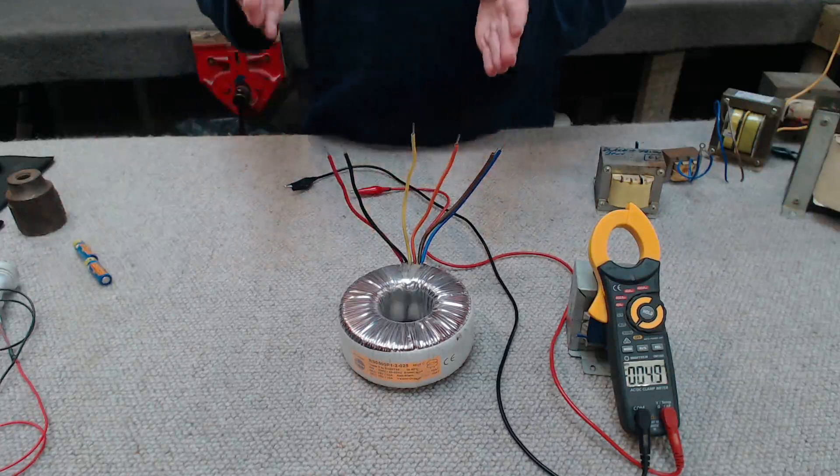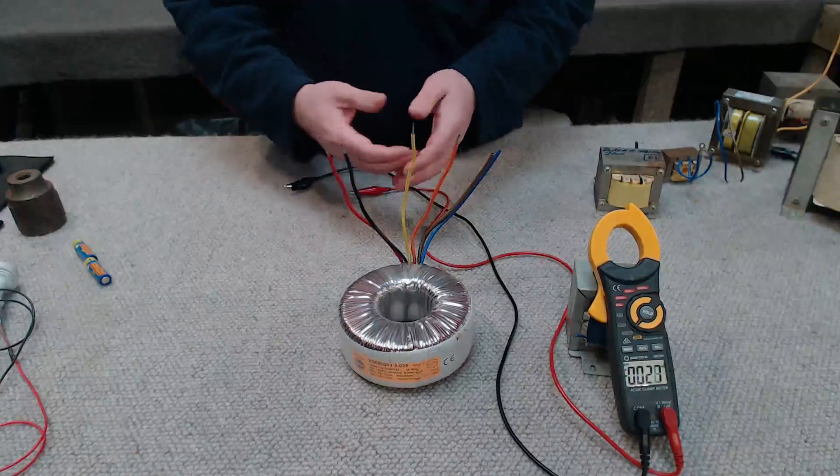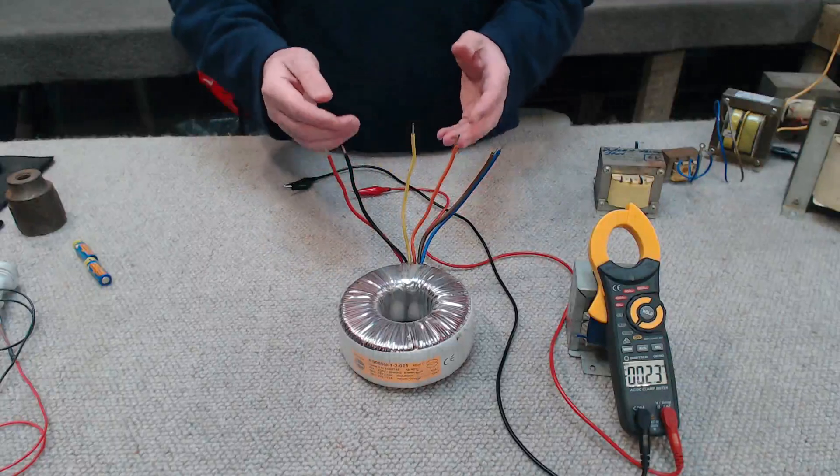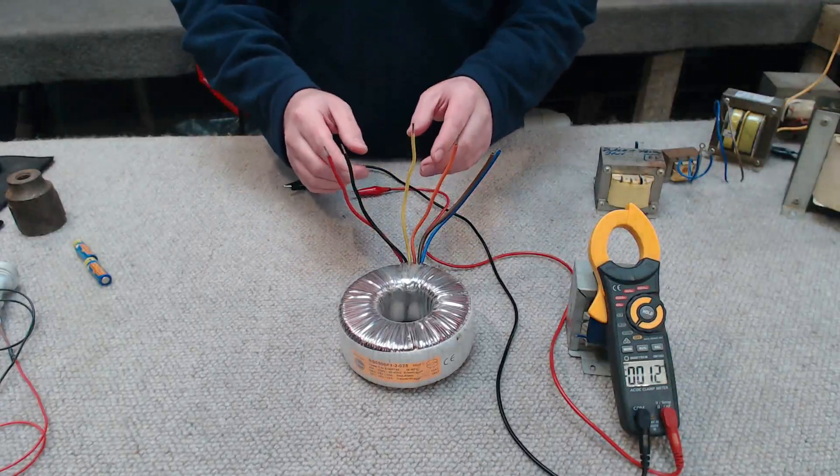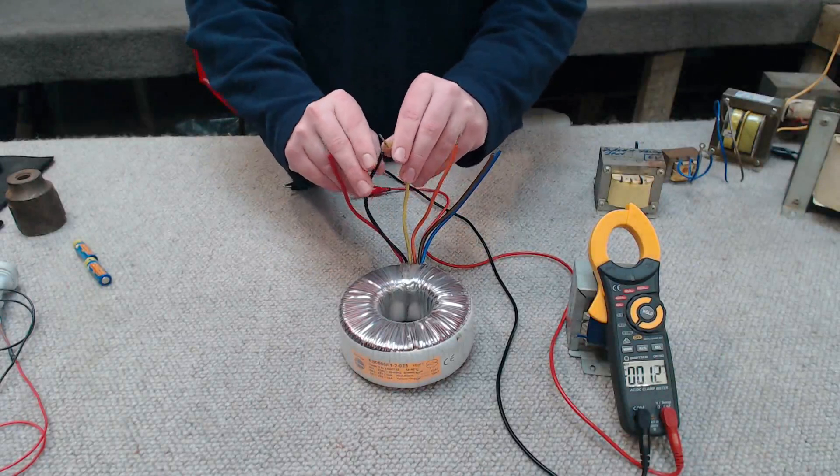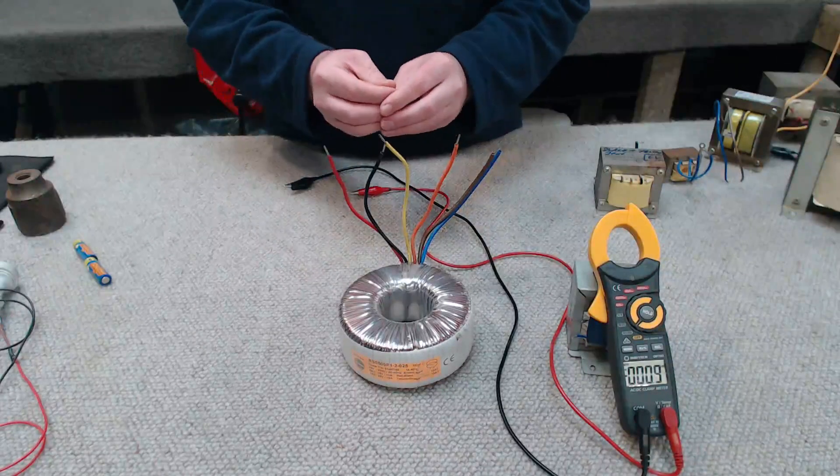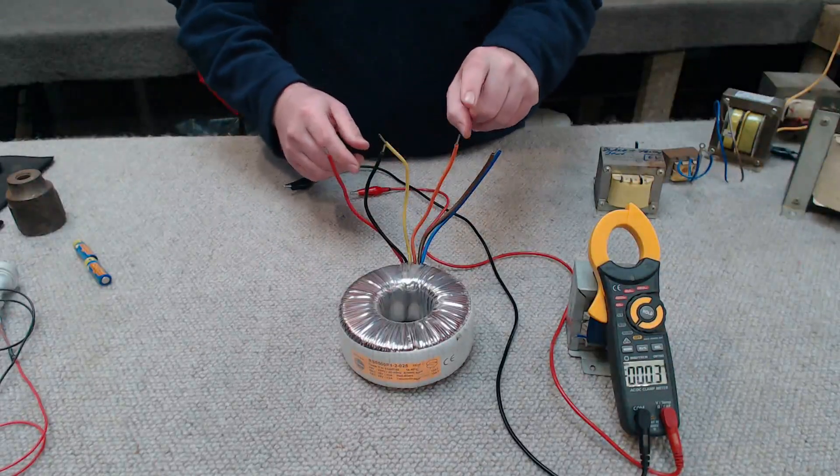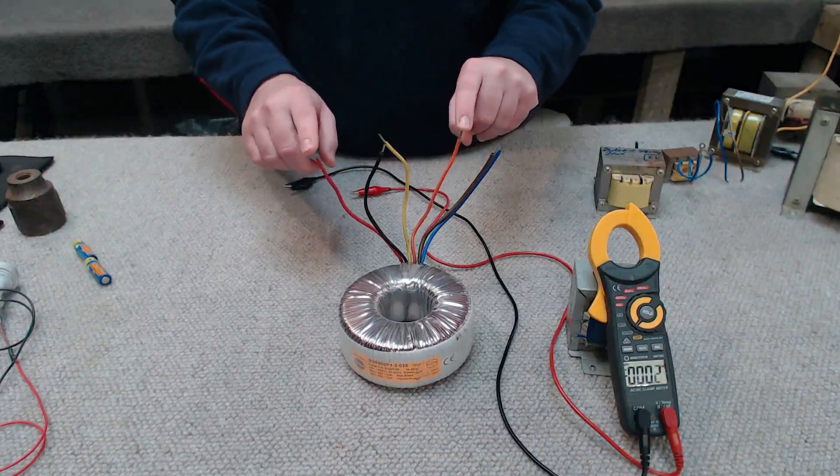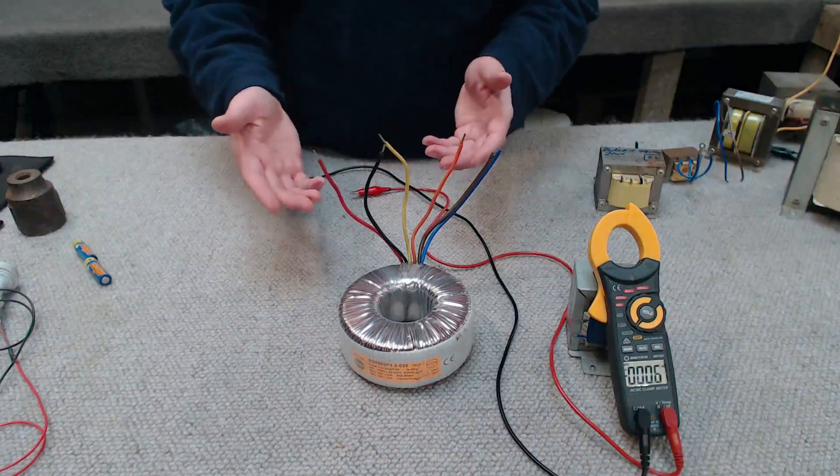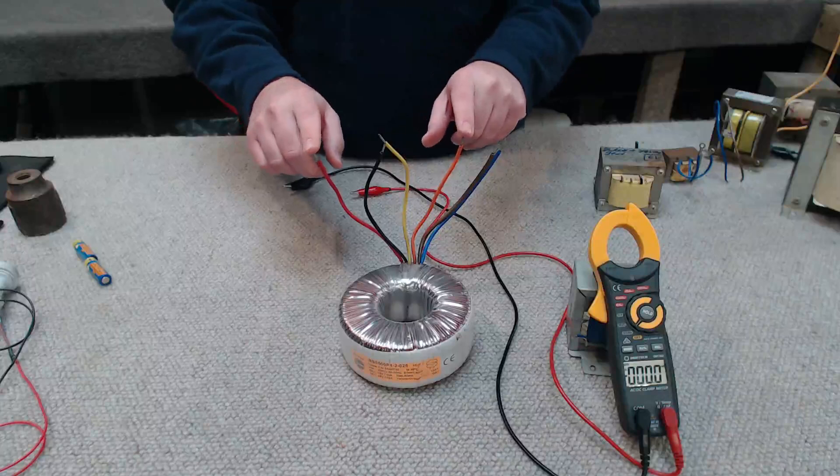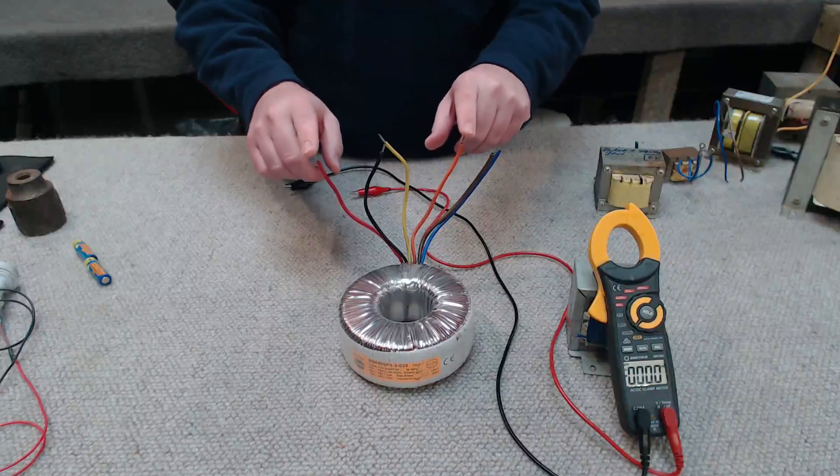Now similarly, with a transformer with multiple secondaries, we can do the same. We can wire both secondaries in series. So let's pretend I electrically connect yellow and black together. Now between orange and red, I'm going to get the voltage of both secondaries combined. So now I'm going to get 50 volts between these two wires.